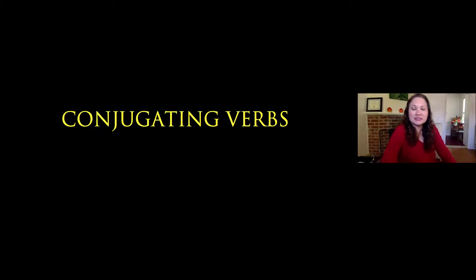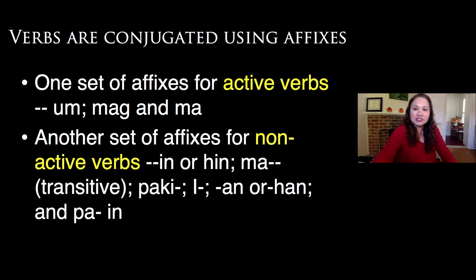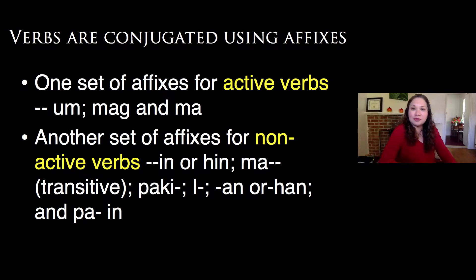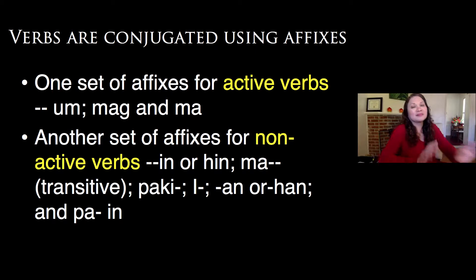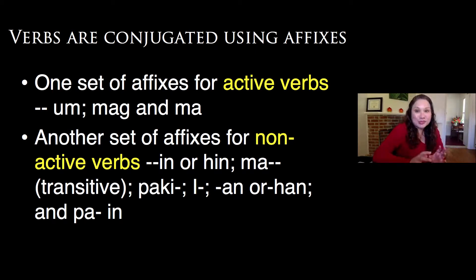The first thing we need to understand is how to conjugate verbs. Verbs are conjugated using affixes. Let's study some examples. Among the affixes used for active verbs are um, mag, and ma. Another set of affixes, for non-active verbs, are in or hin, ma (transitive), pa-ki, i, an or han, and pa-in. Very confusing, but don't worry — let's look at some examples so you don't get confused.